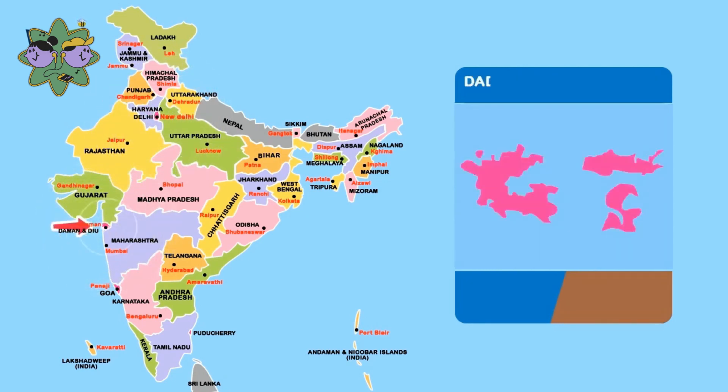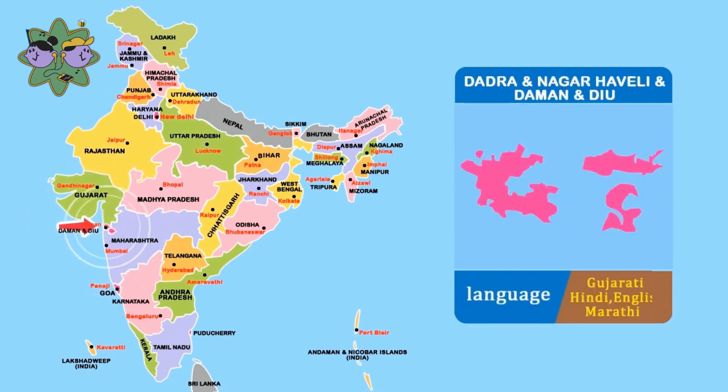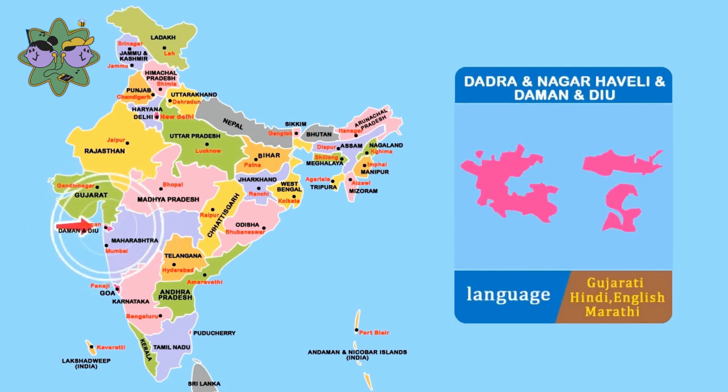Dadra and Nagar Haveli, and Daman and Diu, Language Gujarati, Hindi, English and Marathi.